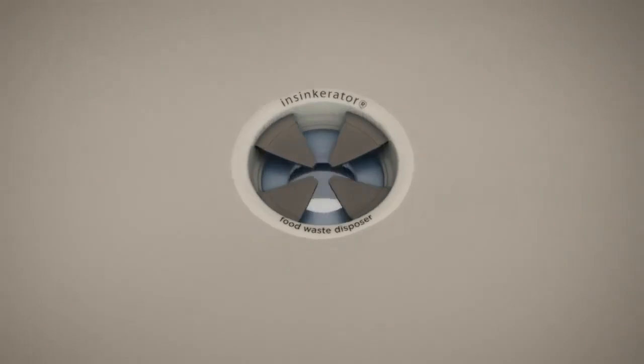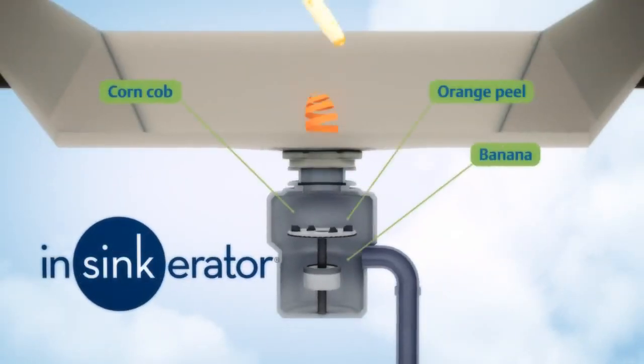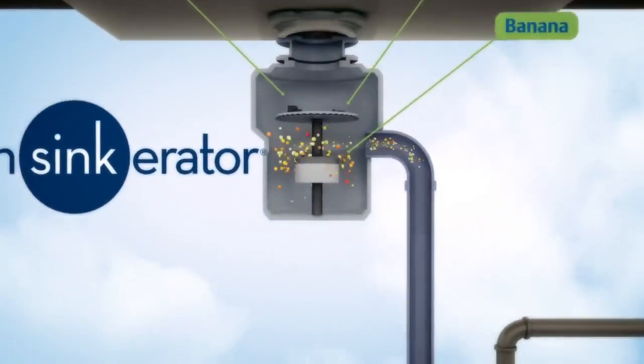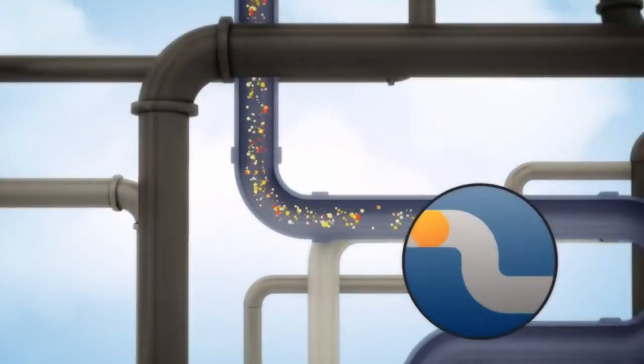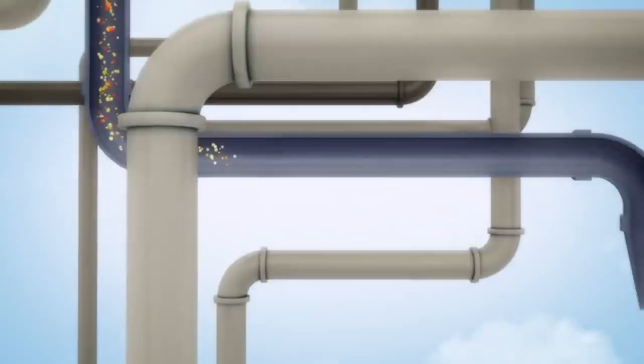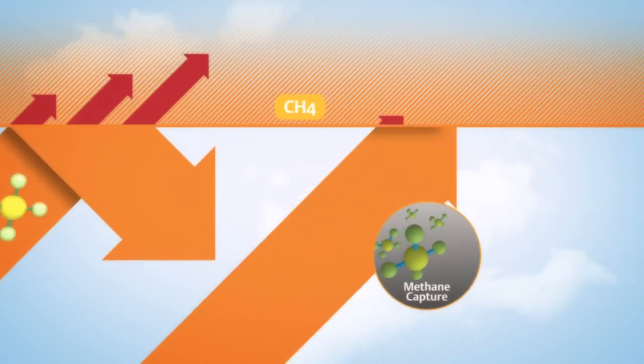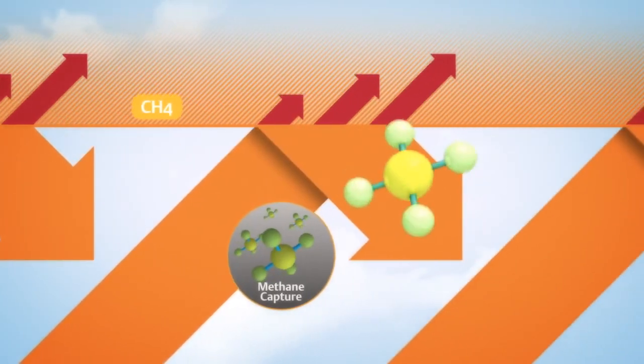Emerson's breakthrough sinkerator disposal efficiently grinds almost all scraps from corn cobs to bananas to bones, without clogs or jams. That's a lot more food waste that's kept out of the landfills and more potential methane kept out of the atmosphere.